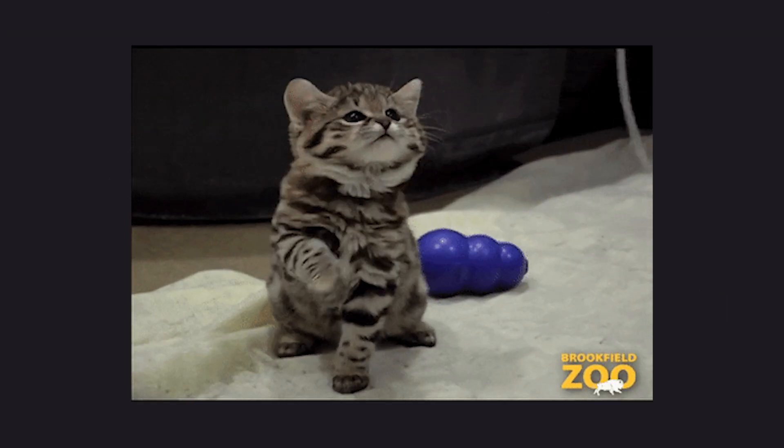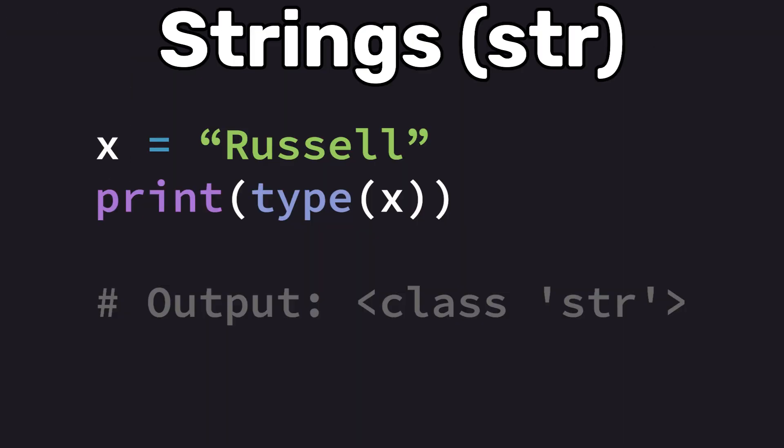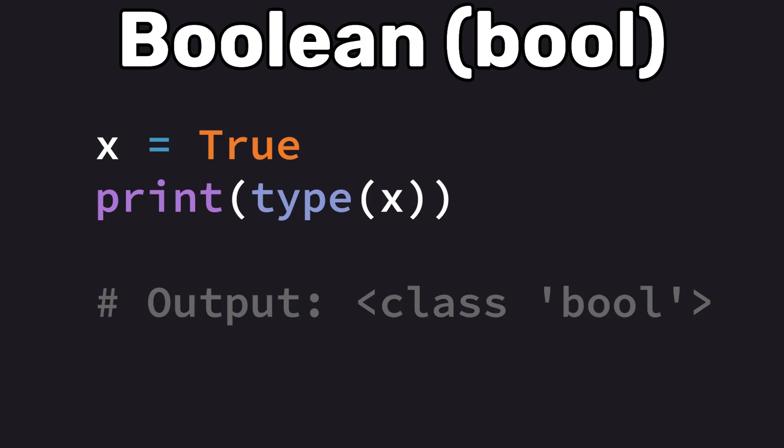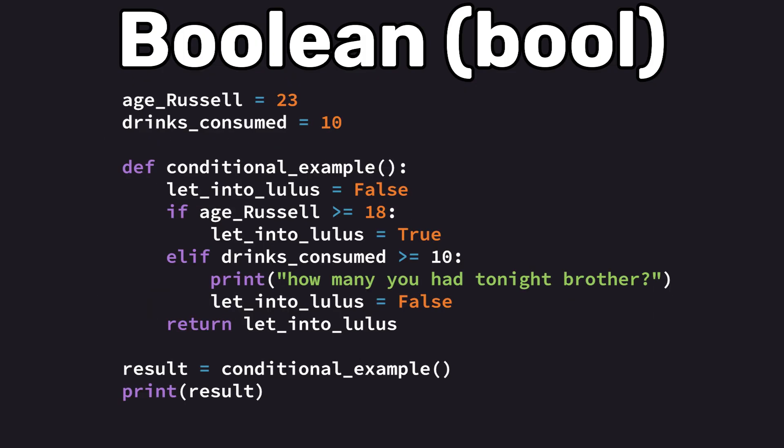The next data type are strings, which are sequences of characters used to represent text. Strings can be enclosed in single quotes, double quotes, or triple quotes for multi-line strings. The boolean data type represents one of two values: true or false. Booleans are often used in conditional statements.